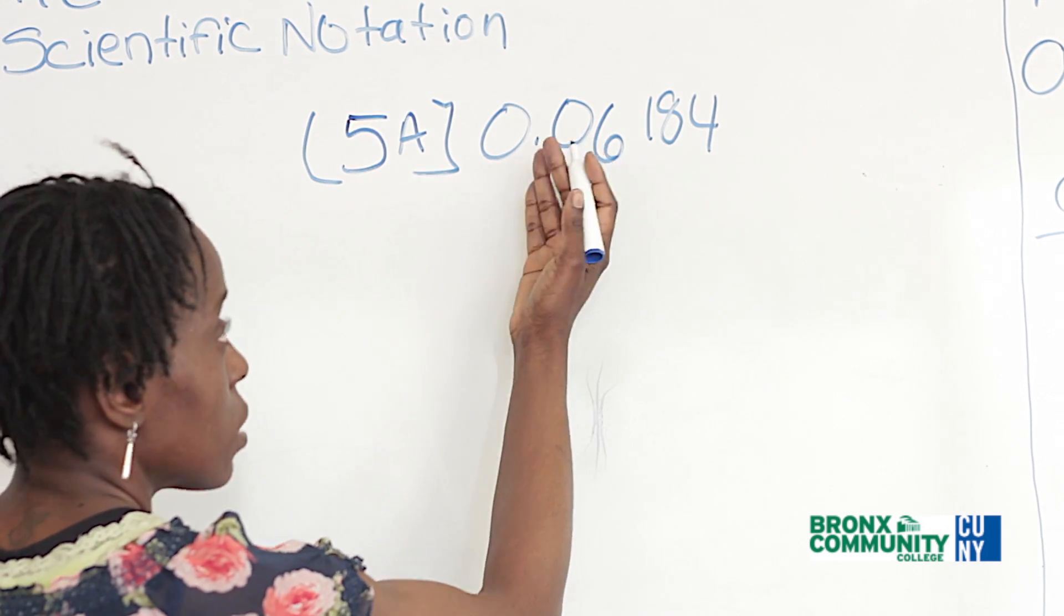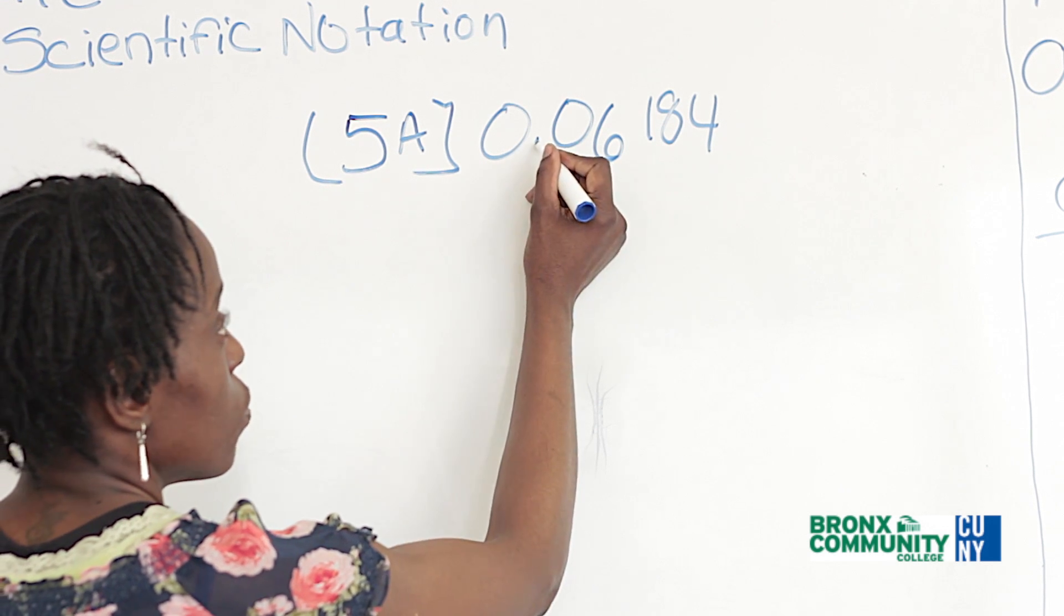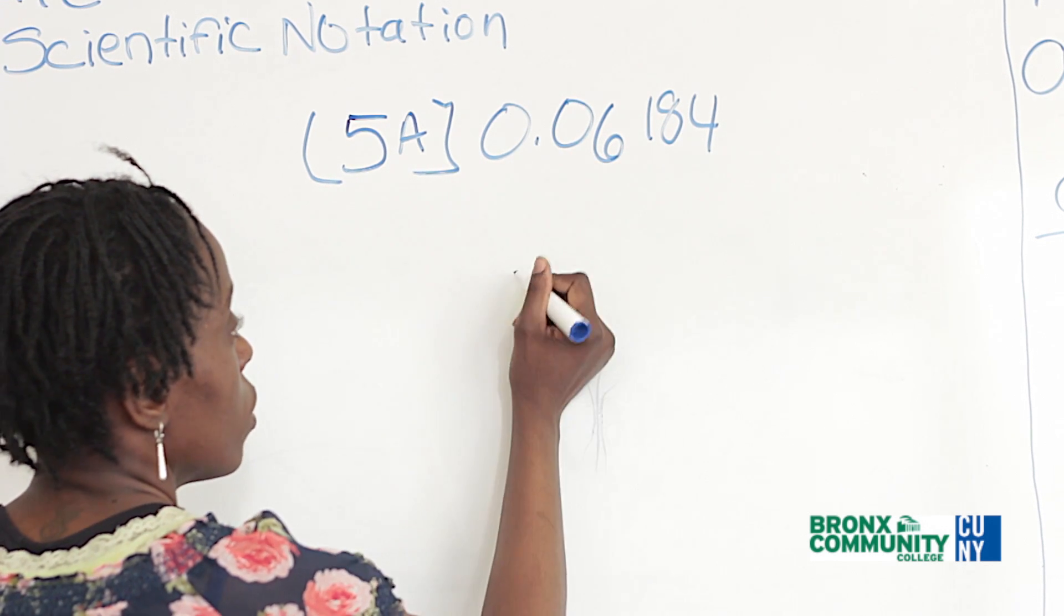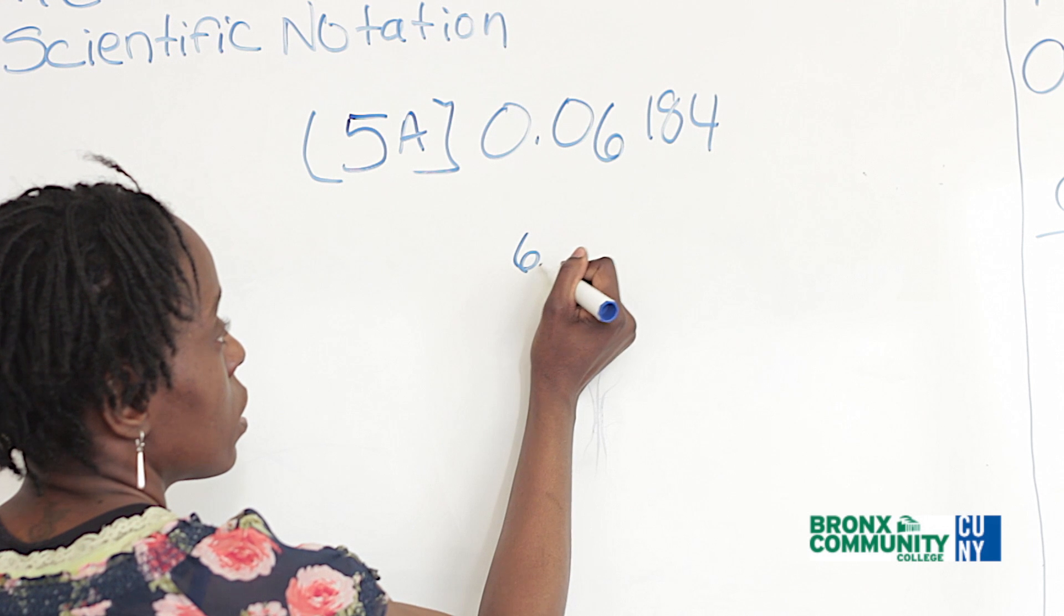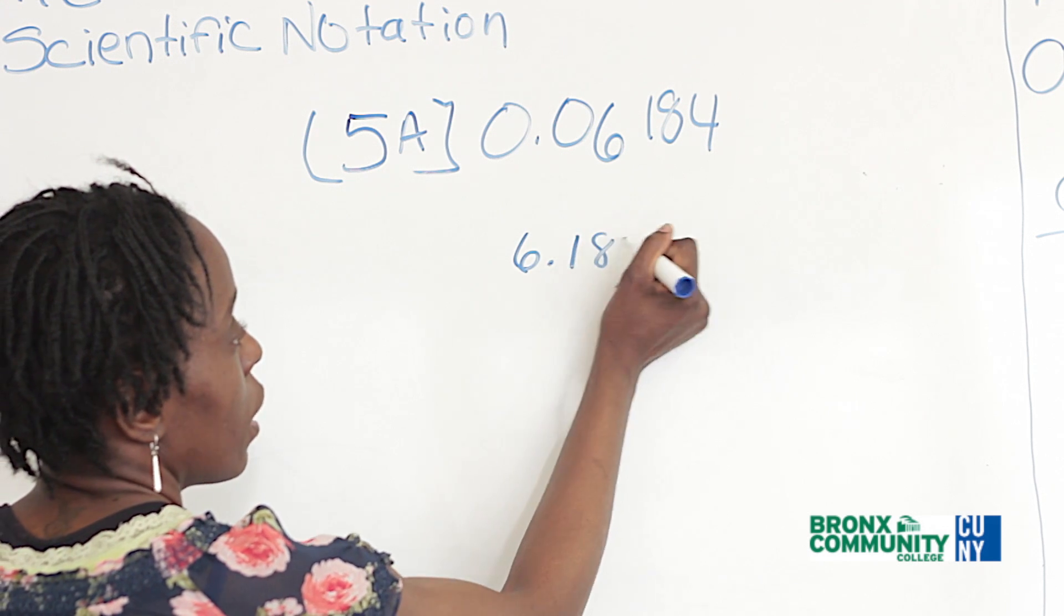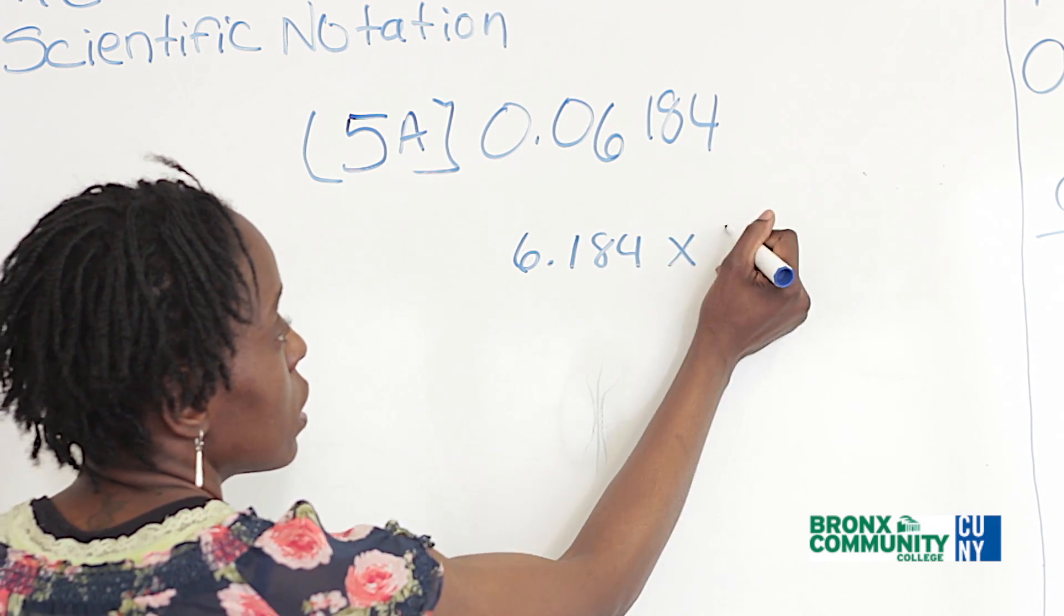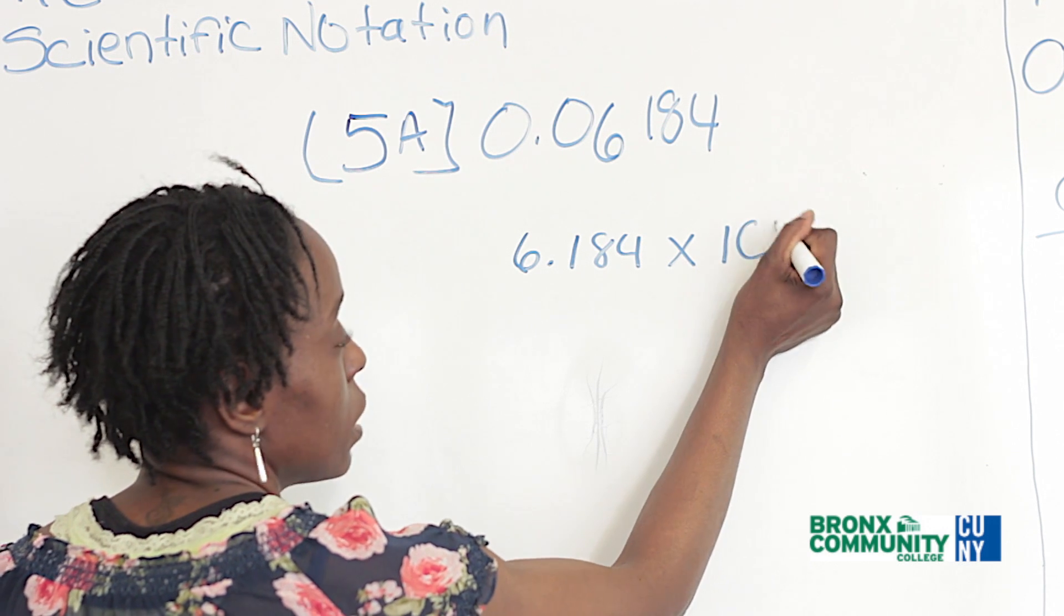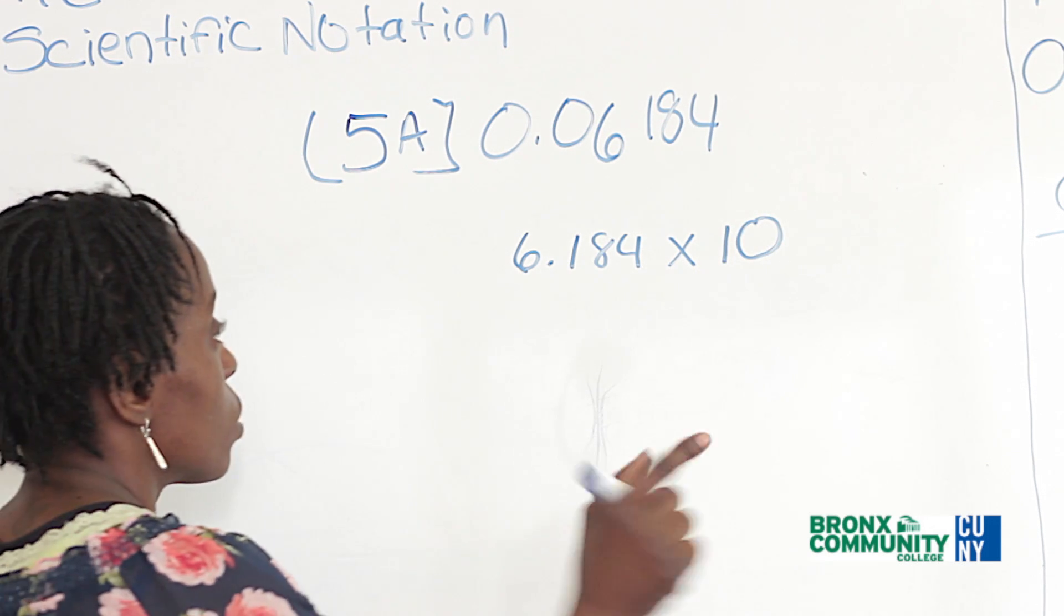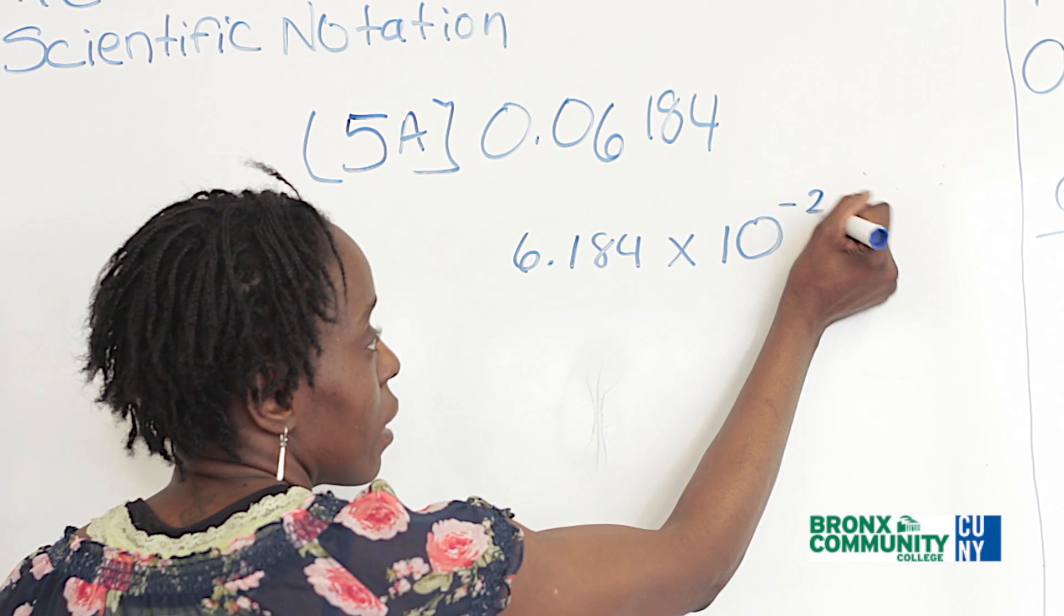So with this number, it's less than 1 already. So we want to move it 1, 2. So now it's going to be 6.184. So we moved it 2 places. But we moved it 2 places going to the right. So this is subtract and put this in the negative.